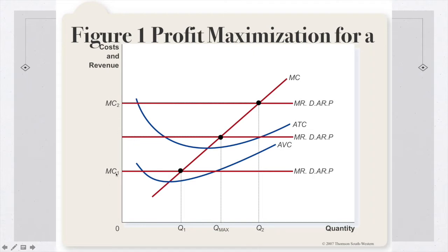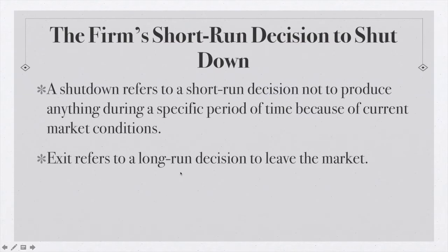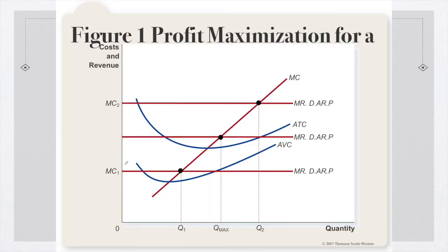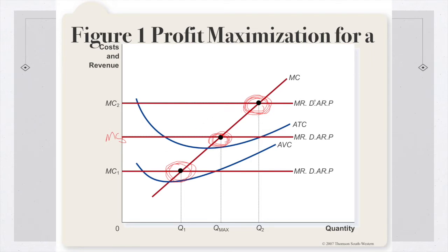On the graph, at MC1 my firm would want to produce Q1. If the price went up to MC2, my firm would want to produce Q2. Because that's where marginal revenue, demand, average revenue, and price equal marginal cost. At MC3, my firm would want to produce at Q max. Wherever the marginal revenue curve intersects the marginal cost curve, that determines the quantity we actually want to produce — wherever MR equals MC.